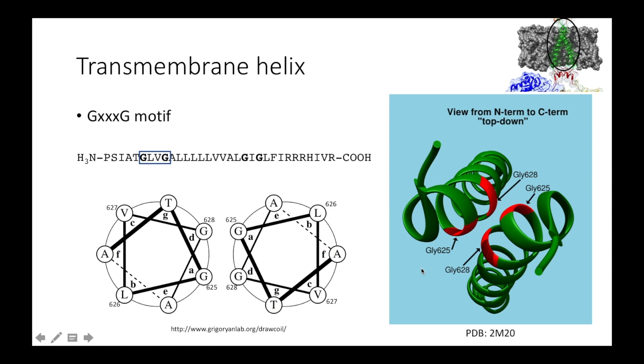Moving on to the transmembrane helices, we can see how this GXXXG motif influences favorable interaction in the hydrophobic space inside the membrane. In EGFR, there are only two residues between the glycines. However, we can see in this helical wheel diagram how well they line up with each other when both helices are side by side. The lack of a side chain means the two helices can approach very closely in the hydrophobic environment inside the membrane.